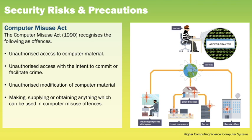Moving on to security risks and precautions. The Computer Misuse Act 1990 recognises the following as offences: unauthorised access to computer material; unauthorised access with intent to commit or facilitate further crime; unauthorised modification of computer material; and making, supplying or obtaining anything that can be used in computer misuse offences. This means writing, supplying or obtaining malicious applications — for example viruses, worms or trojans — that enable unauthorised access to a computer system.